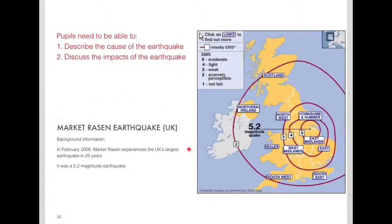You need to make your notes starting with this background information that outlines the date in terms of the year, the location and the magnitude of the earthquake. This map shows you the location here and these lines represent where the earthquake was felt throughout the UK.